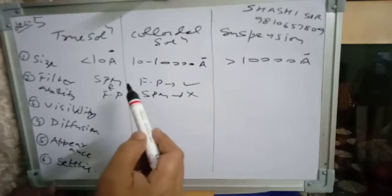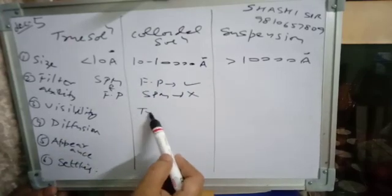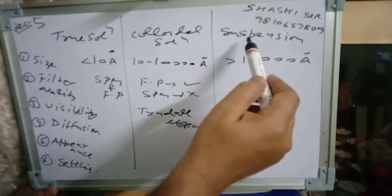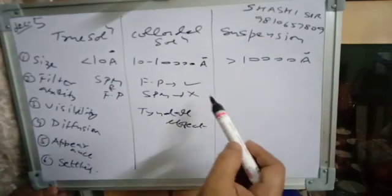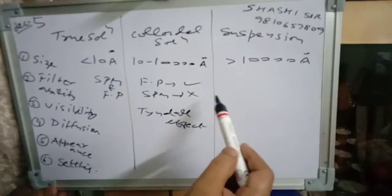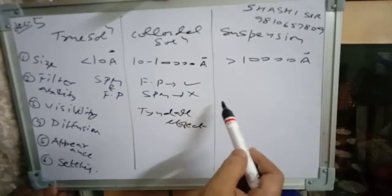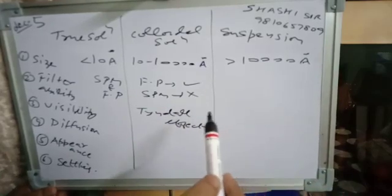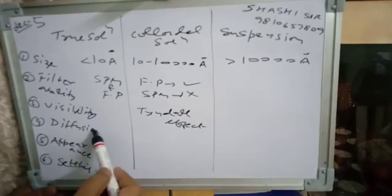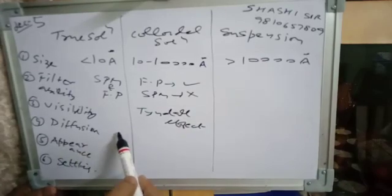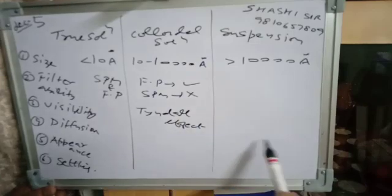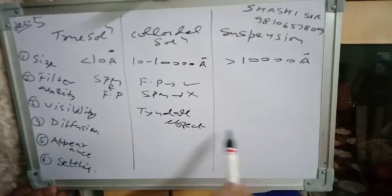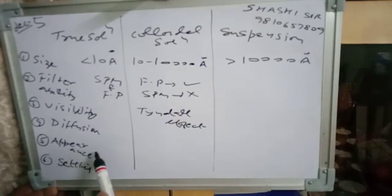On the basis of visibility: in suspension, particles are either visible by simple microscope or by naked eyes. On the basis of diffusion: true solution particles diffuse quickly, colloidal solution particles diffuse slowly, and suspension particles do not diffuse.